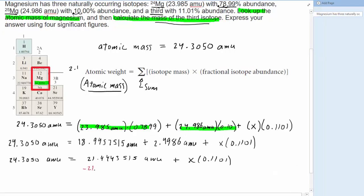We can now subtract from both sides of this equation the 21.4443515 AMU. Notice that we're writing out the numbers without doing any rounding yet. We want to make sure we round at the end of the problem. So we'll do this subtraction. We'll cancel out on the right-hand side.